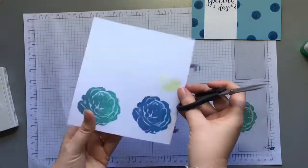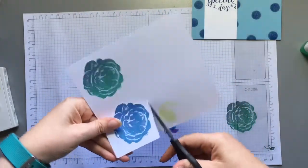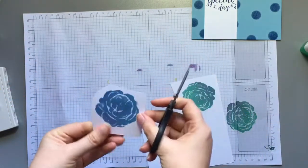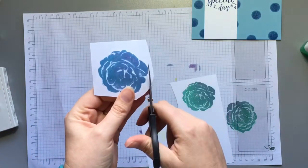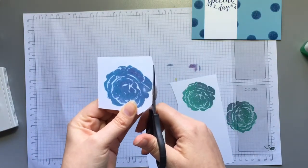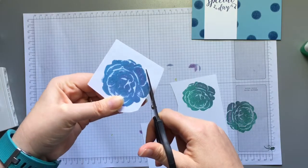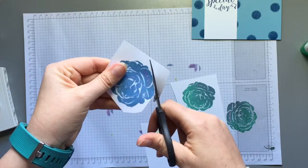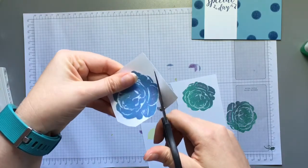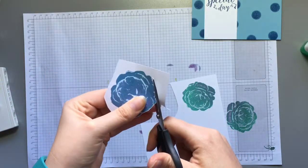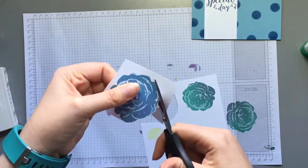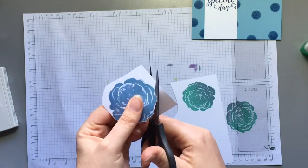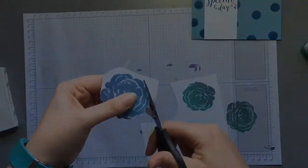Grab my paper snips and I'm going to fussy cut my flower. When you're fussy cutting it's much easier to move the paper rather than the scissors. It makes it much quicker and it's usually a lot more accurate. And I'll come back when this is all cut.